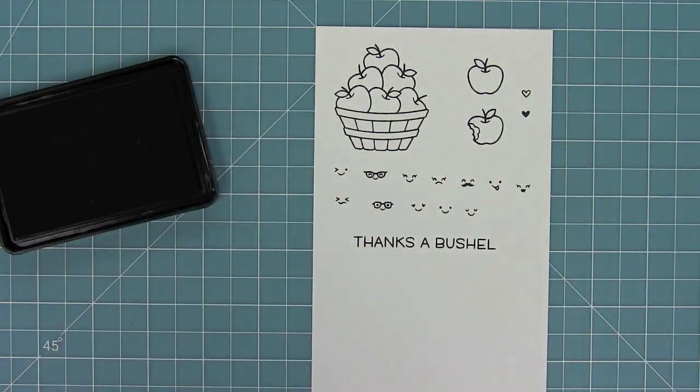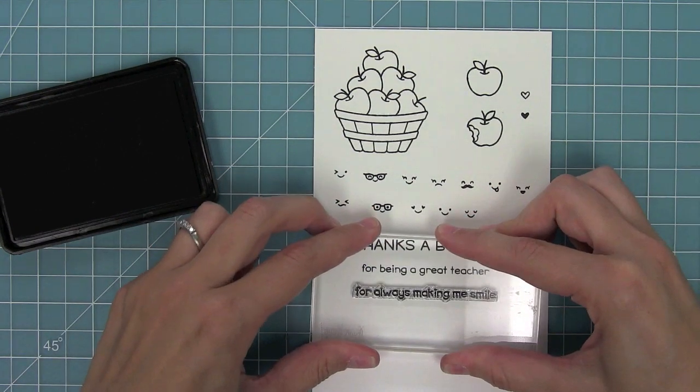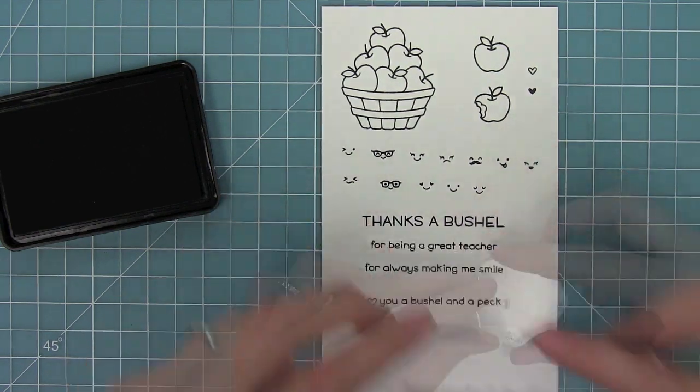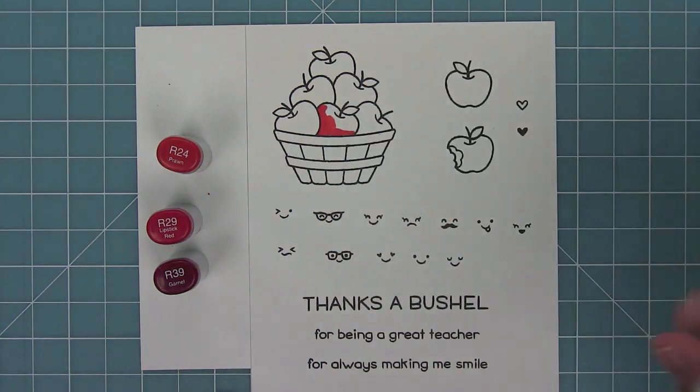Then we have some great sentiments. We have thanks a bushel with sentiments that can go with it: for being a great teacher and for always making me smile. Then we have I heart you a bushel and a peck and an exclamation point to add to the end of those phrases.